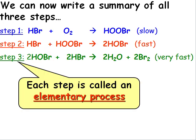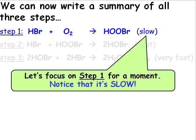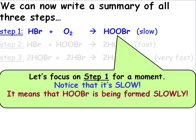Each step in a reaction mechanism is called an elementary process. Let's focus on step 1 for a moment. Of course we see that it's slow. It means that the HOBr is being formed slowly.